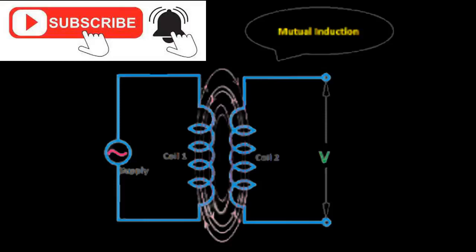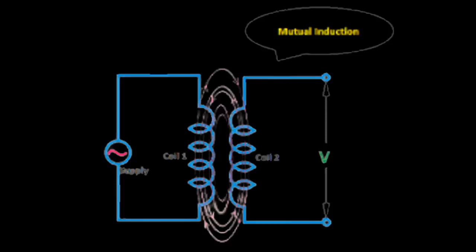A transformer is made up of two inductive coils, primary winding and secondary winding. The coils are electrically separated but magnetically connected.